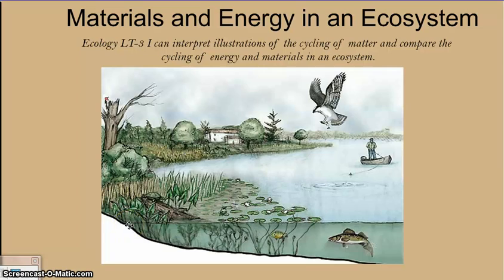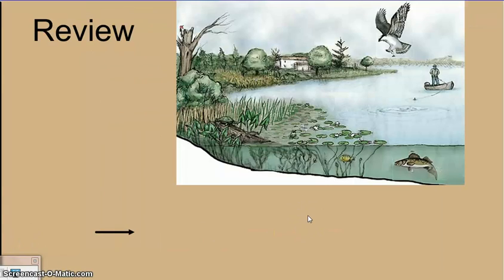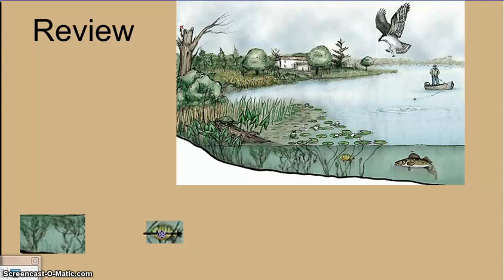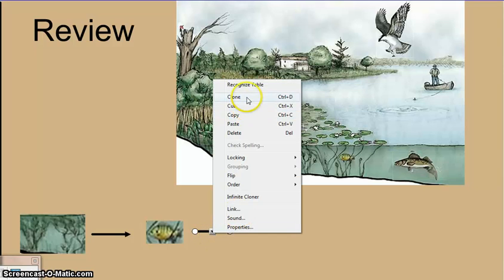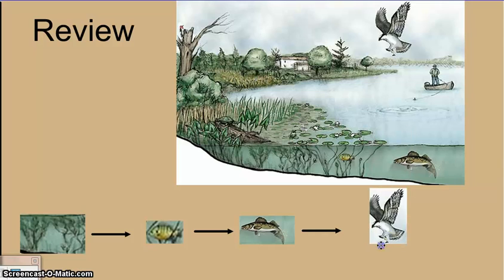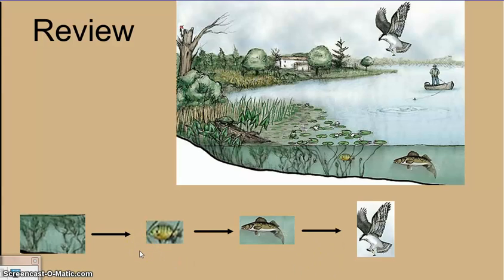Here we have a picture of an ecosystem. This learning target is really about understanding the relationship between matter and energy, which are two different things. Let's review what we've learned about energy movement using food chains. Plants take the sun's energy in, and then those are eaten by smaller animals, like this little fish. The small fish are then eaten by larger fish, and the larger fish are eaten by things like hawks. This food chain shows the movement of energy, transferred from one organism to another.